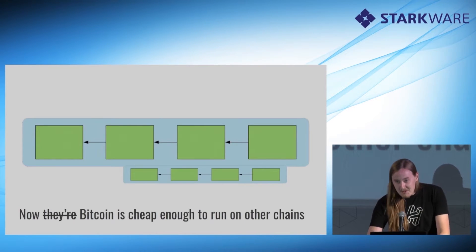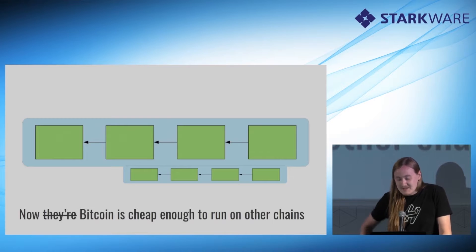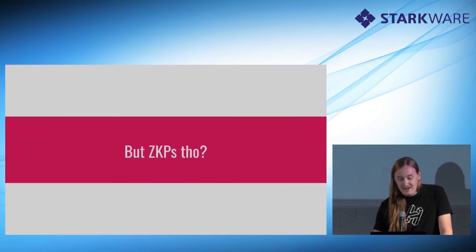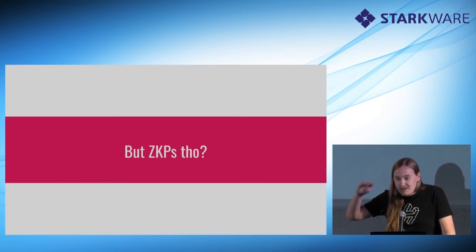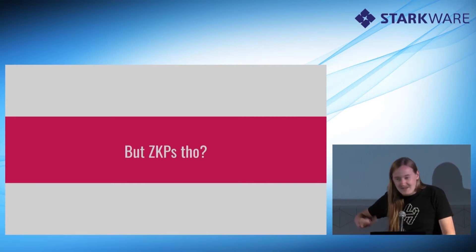So Bitcoin is cheap enough to run on other chains, which is nice — because Bitcoin is the thing we actually all want anyway. It's Bitcoin, Ethereum, and then everything else.